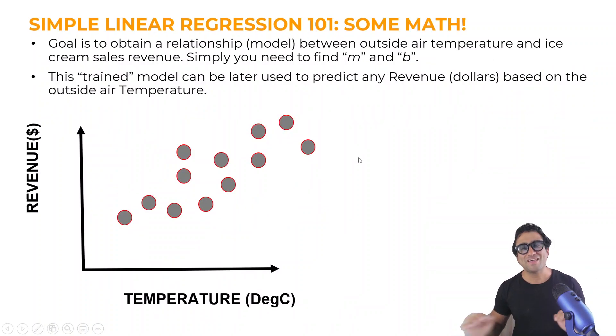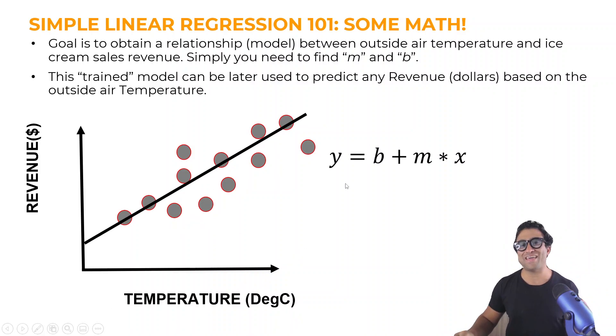So when I say that I wanted to obtain a simple linear regression model, essentially all what I'm trying to do is I'm trying to find a straight line equation. And this is simply my straight line equation. If you guys recall from any math or statistics course that you took in the past, is that you can represent an equation of this straight line here by the following. You can say y equals to b plus m times x.